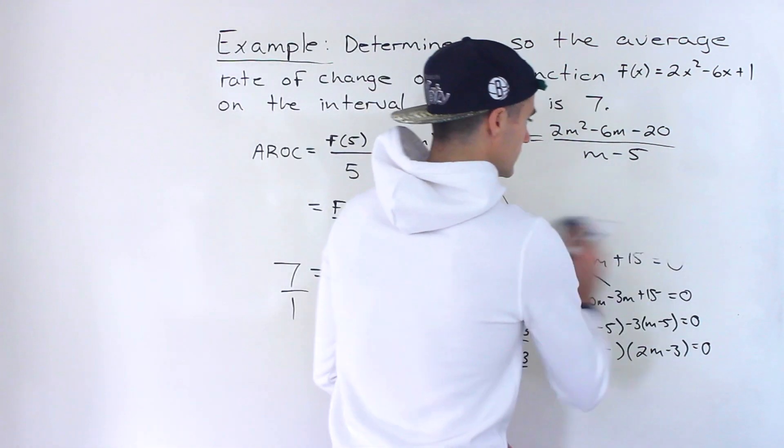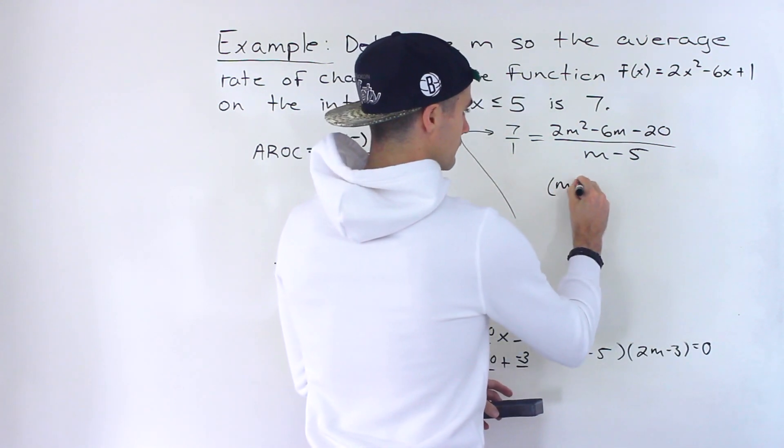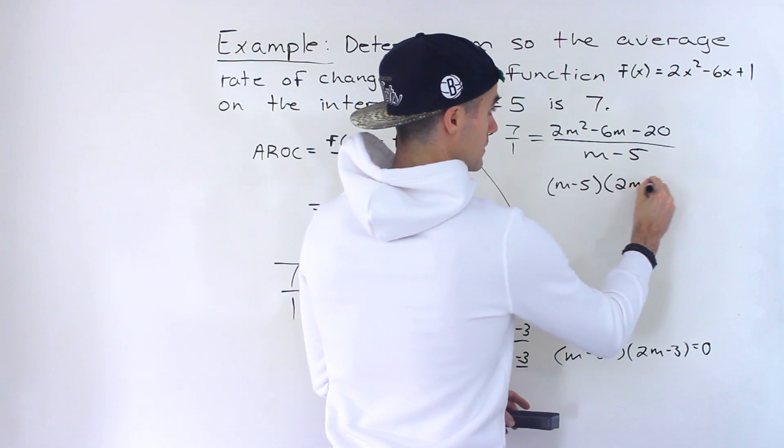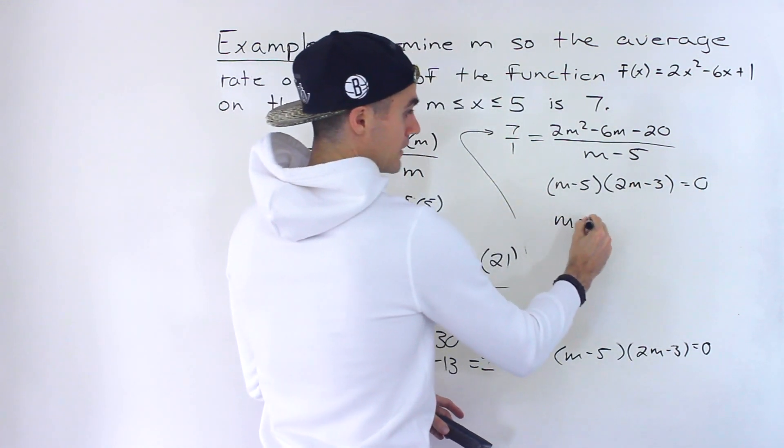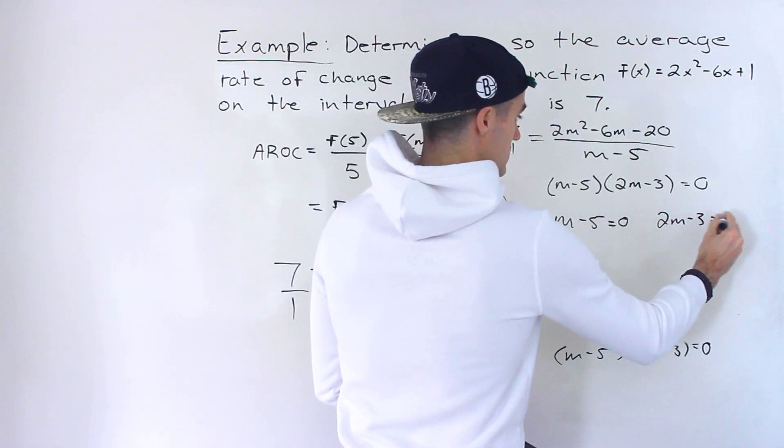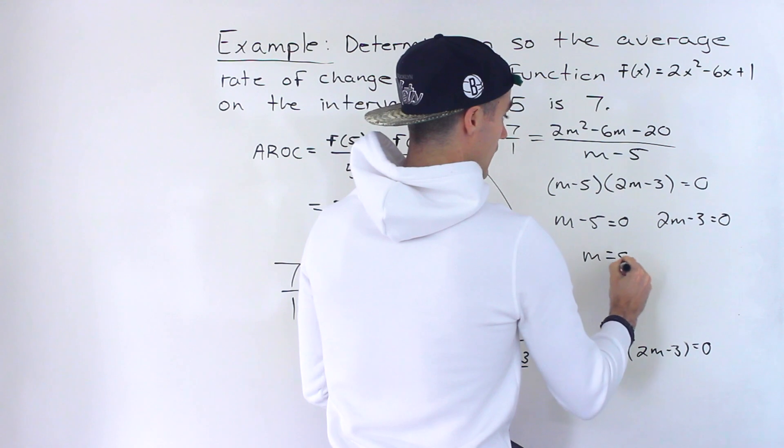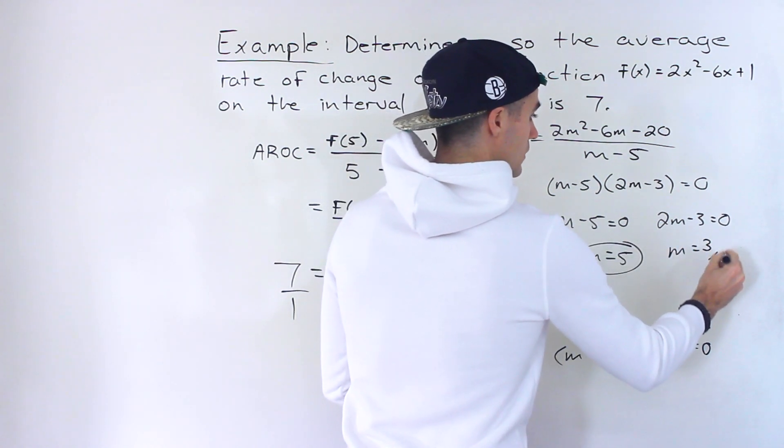So ultimately, we end up having (m - 5)(2m - 3) = 0. And so from here, m - 5 = 0 or 2m - 3 = 0. Notice here, m would be 5. Then notice here, m would be 3/2.